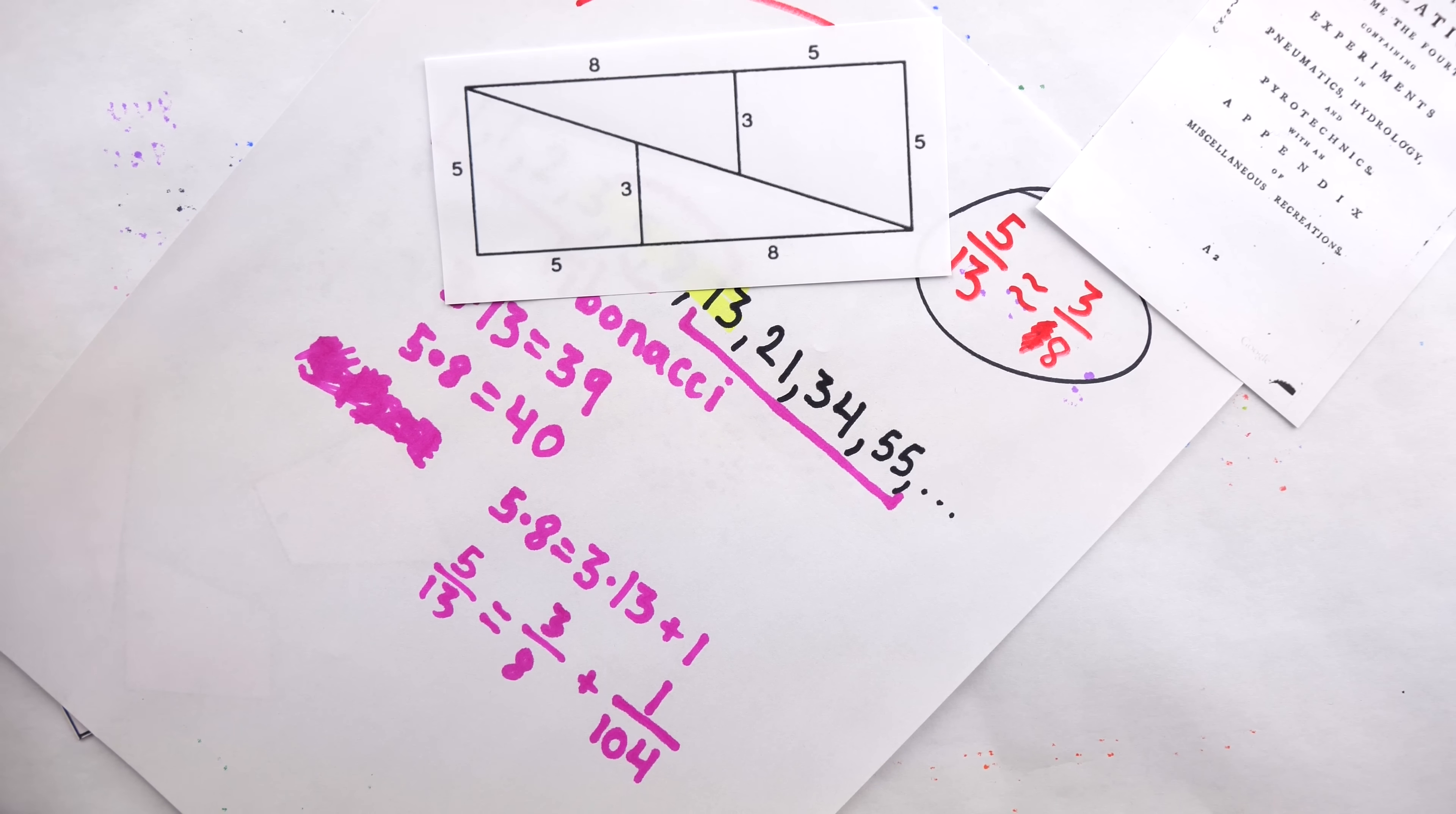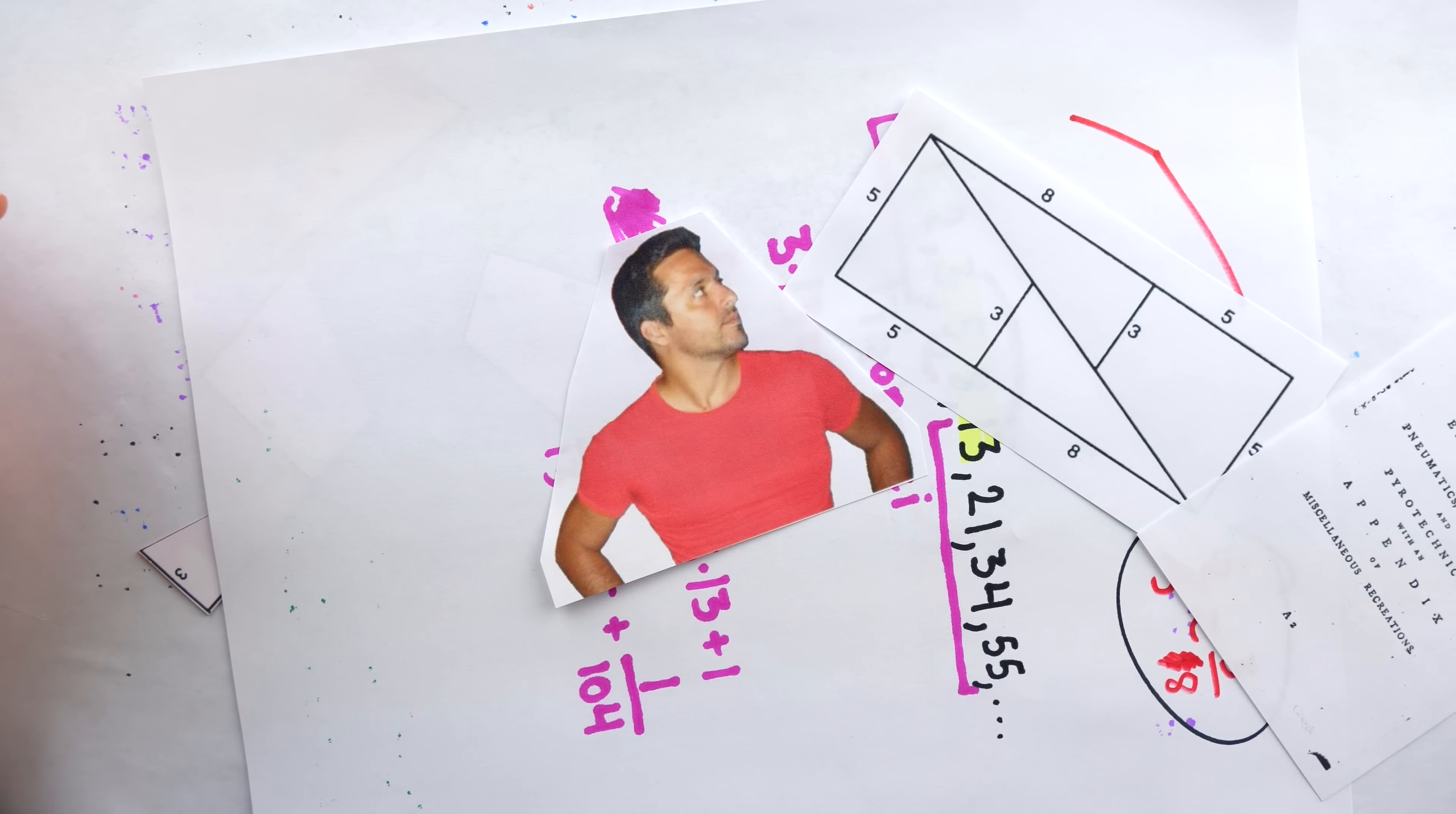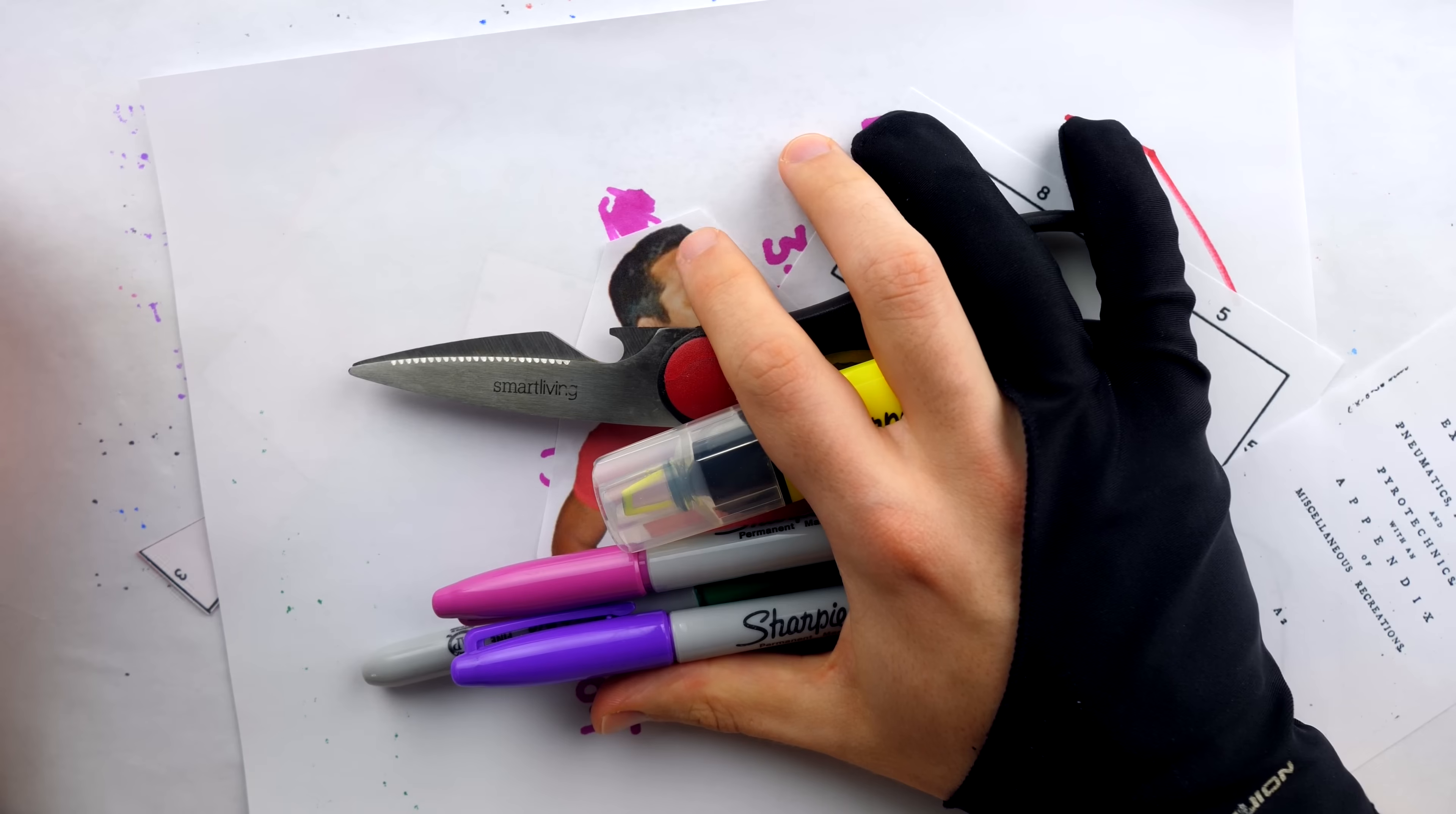And let me know in the comments if you have a favorite variation of the vanishing square paradox. Be sure to subscribe as well for more of the swankiest math videos on the internet.